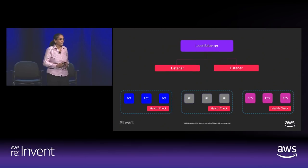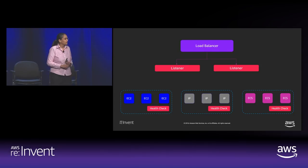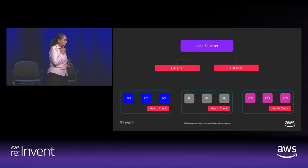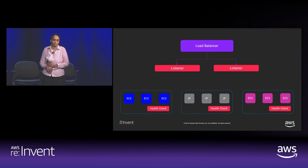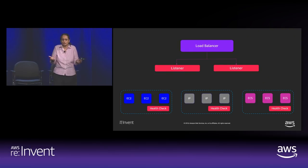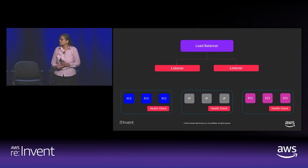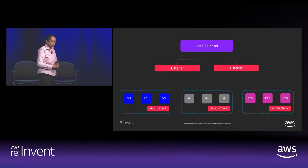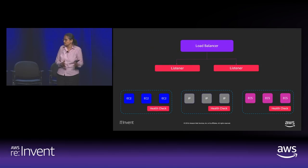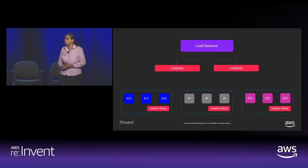Starting with the API models: you create the load balancer, then add a listener — a port and a protocol, in this case HTTP or HTTPS, and we recommend HTTPS. You should have at least one listener per load balancer, and you can have 50 listeners per load balancer. The other construct is target groups — a virtual grouping of targets. We support EC2 instances, IP addresses, and containers. The target group should be homogeneous — targets within a target group must be of the same type.